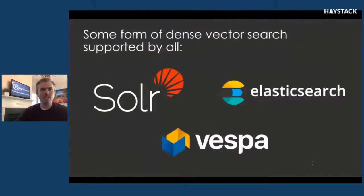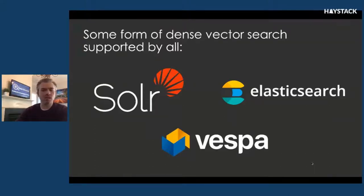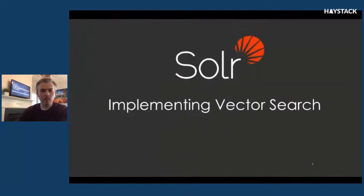Implementing this kind of vector search requires dense vector support in your search engine. All of the open source or partially open source search engines — Solr, Elastic, Surge, Vespa, et cetera — contain some level of dense vector support. I'm typically using Solr, so I'm going to show you some examples of how to do this with Solr today. One of the first ways is through Solr's streaming expressions capabilities.